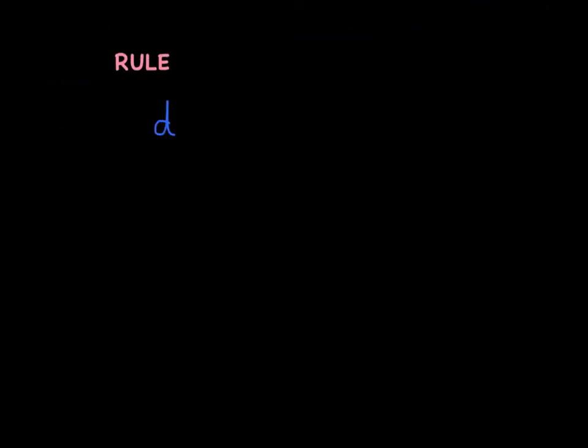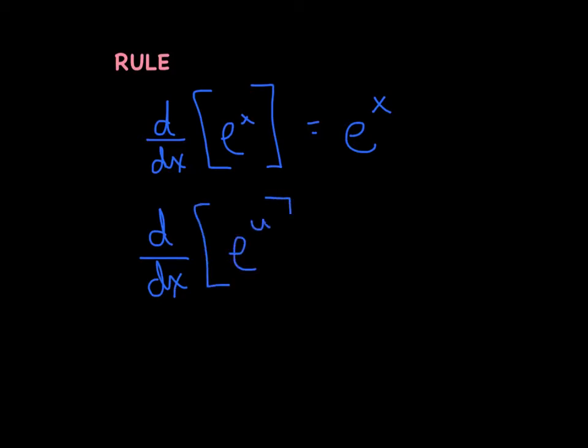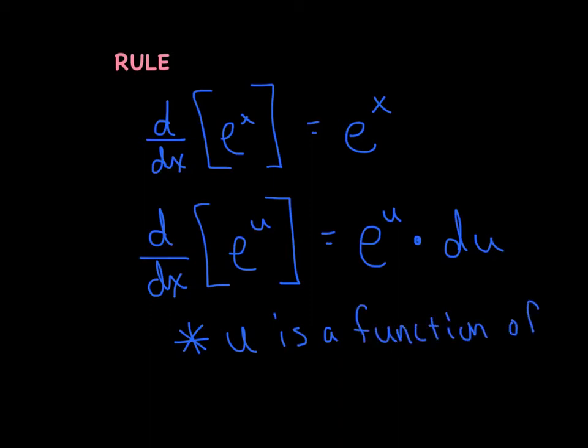All right, so here are our rules. If we want to derive just good old-fashioned e to the x, as we mentioned on the last slide, he is his own derivative. And then if we want to get a little fancier here and derive e to a more obnoxious power, a more intense power, what we're going to do is the original function multiplied by the derivative of the exponent. And we'll put a little asterisk there. u is a function of x. In other words, u could be tangent squared of x, or u could be basically anything that you could imagine in your mind, a trinomial like x squared minus 2x plus 3, and so forth and so forth.